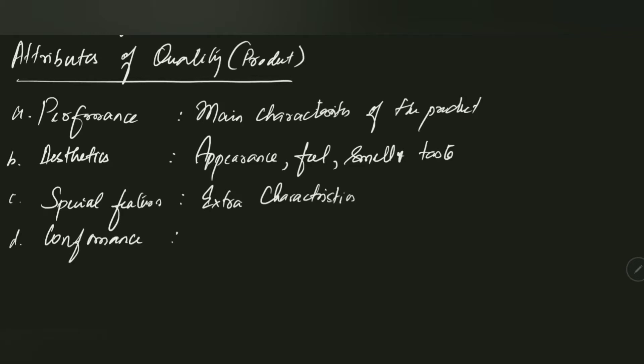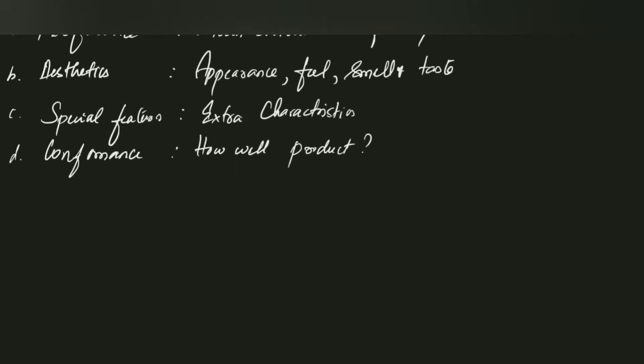The next attribute is conformance. Conformance talks about how well the product performs — for example, how well a Samsung mobile functions overall. It is about how well the product conforms to expected standards.